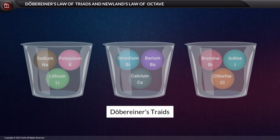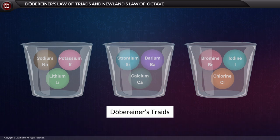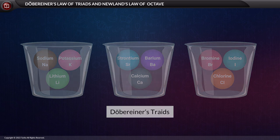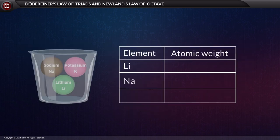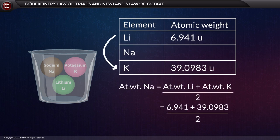Based on his observation, Döbereiner wrote his law: the atomic weight of the element in the middle is nearly equal to the average atomic weight of the other two elements in the triad. For example, lithium, sodium, and potassium were arranged in a group of three. The atomic weight of lithium is 6.941 u and that of potassium is 39.0983 u, giving an average of 23.01965 u, which is approximately equal to the atomic weight of sodium.